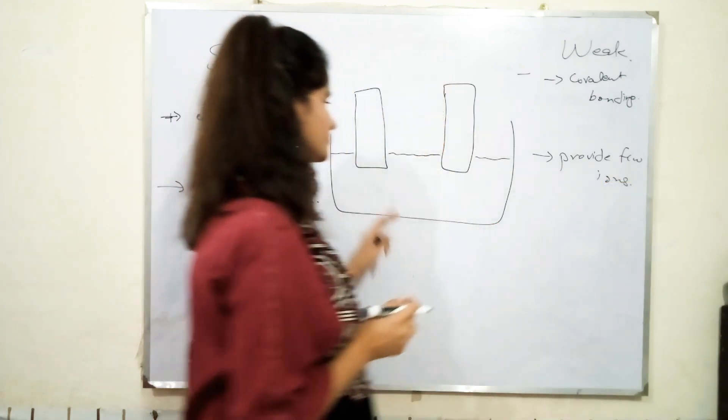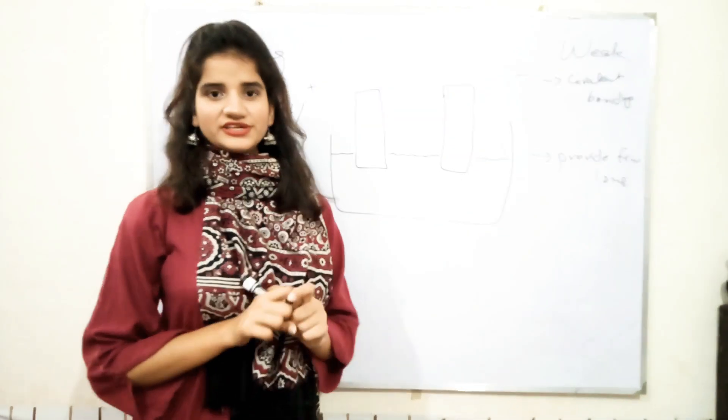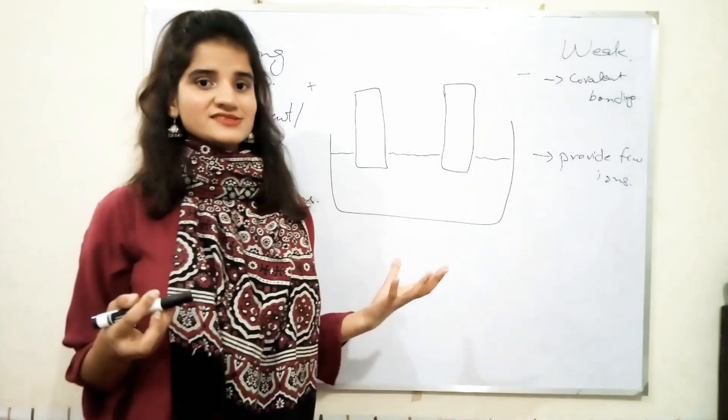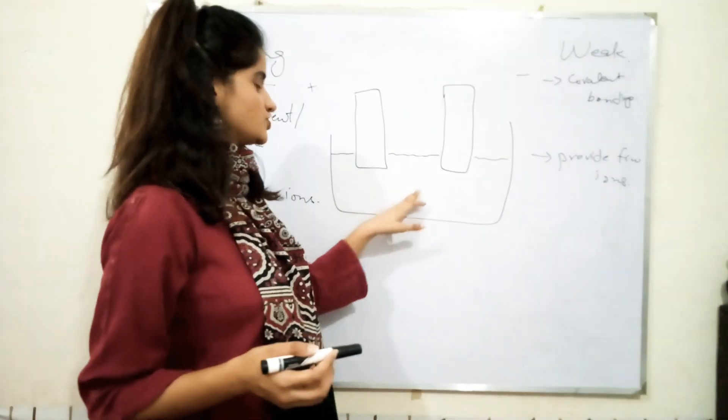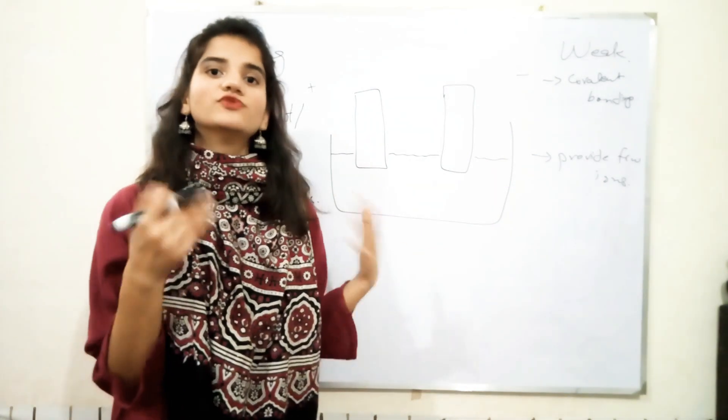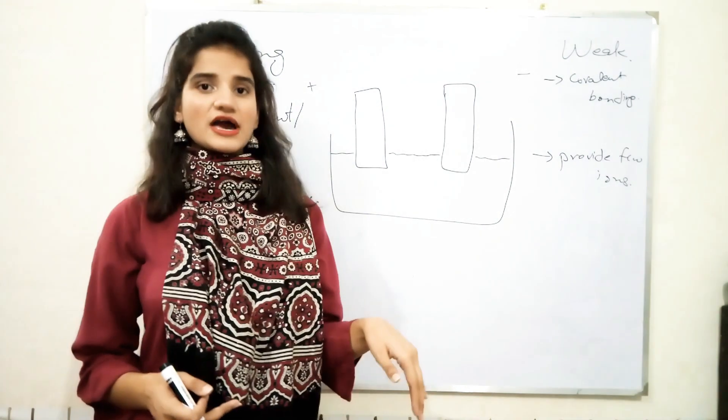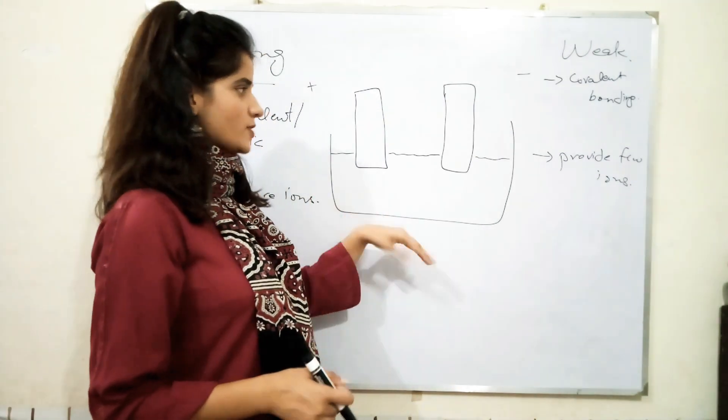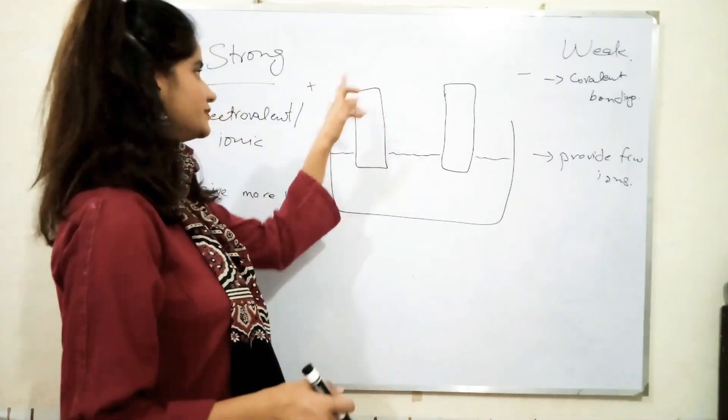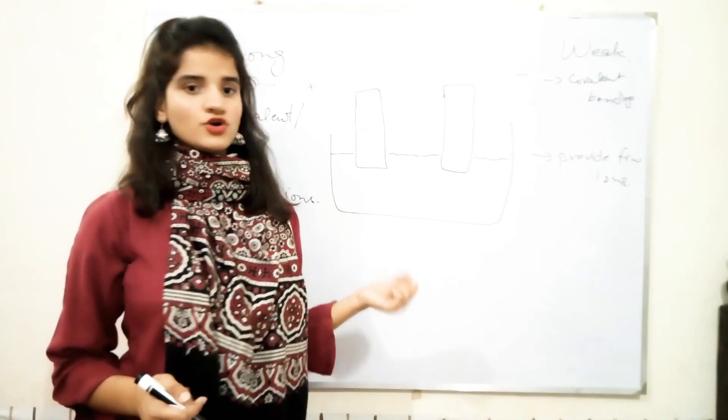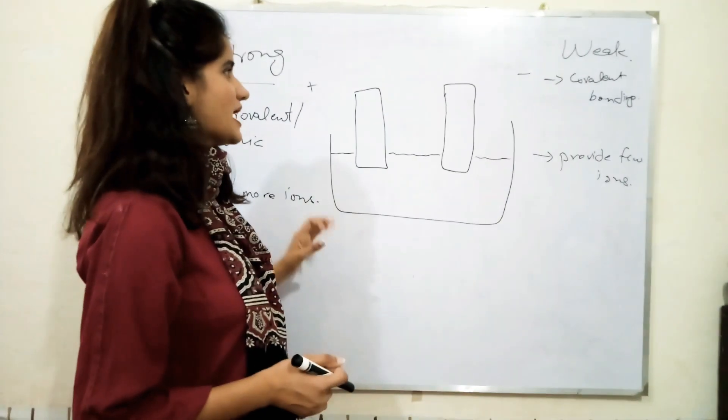Now, how these ions are produced? When current passes through it, chemical changes occur in this solution. And these electrolytes which are present in the form of molecules, they will break down themselves. They will dissociate themselves and convert into ions. When they are converted into positive and negative, accordingly they will attract the electrodes which are present inside. So, this is the process which actually happens in here.